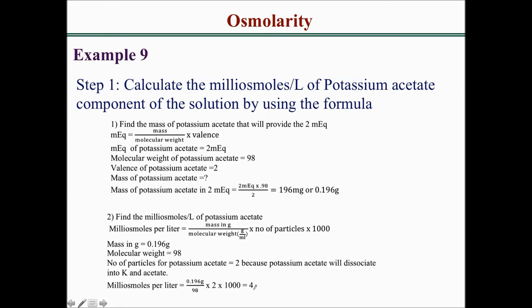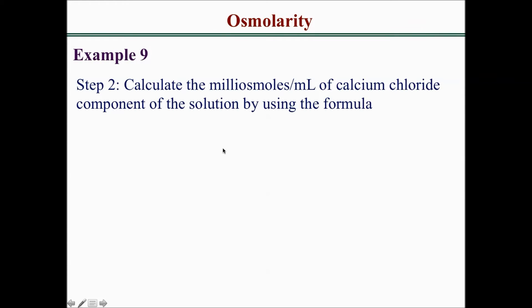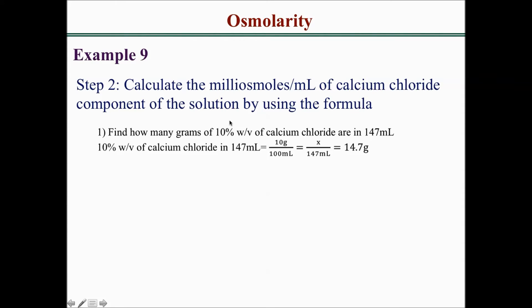So a 2 milliequivalent potassium acetate solution will have 4 milliosmoles per liter. Step 2 is to calculate the milliosmoles per liter of the calcium chloride component. First, we need to find how many grams of 10% weight by volume calcium chloride are in 147 ml. Since 10% w/v means 10 grams in 100 ml, we set up a proportion: 10 grams over 100 ml equals x over 147 ml, giving us 14.7 grams.